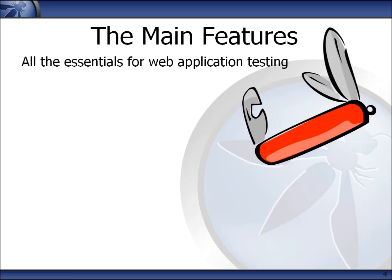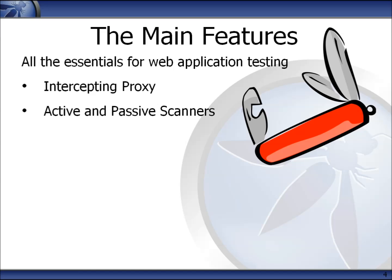ZAP provides all of the essentials that you'll need for testing web applications. If you are new to security, it will probably provide all the features you need, although professional penetration testers will always want to use a wide variety of tools. Each of these features is the subject of a training video. It is an intercepting proxy, so you typically configure your browser to proxy through ZAP so that ZAP can see all of the requests and responses. You can also intercept and change them. It provides both active and passive scanners. The passive scanner just examines the requests and responses, but can still detect certain types of problems. The passive scanner runs all of the time and is completely safe to use on any site, as it does not perform any attacks.